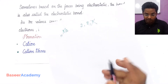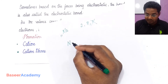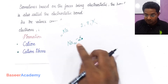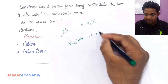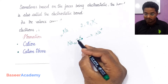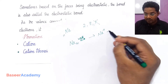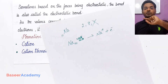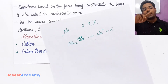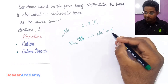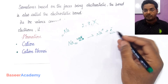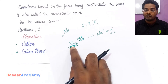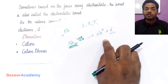In chemical equations, instead of writing minus electron on the left-hand side, we add the electron to the right-hand side. If the electron appears on the right-hand side, it means sodium lost one electron. After losing one electron, sodium becomes a unipositive ion — Na⁺. The positive ion is known as a cation.